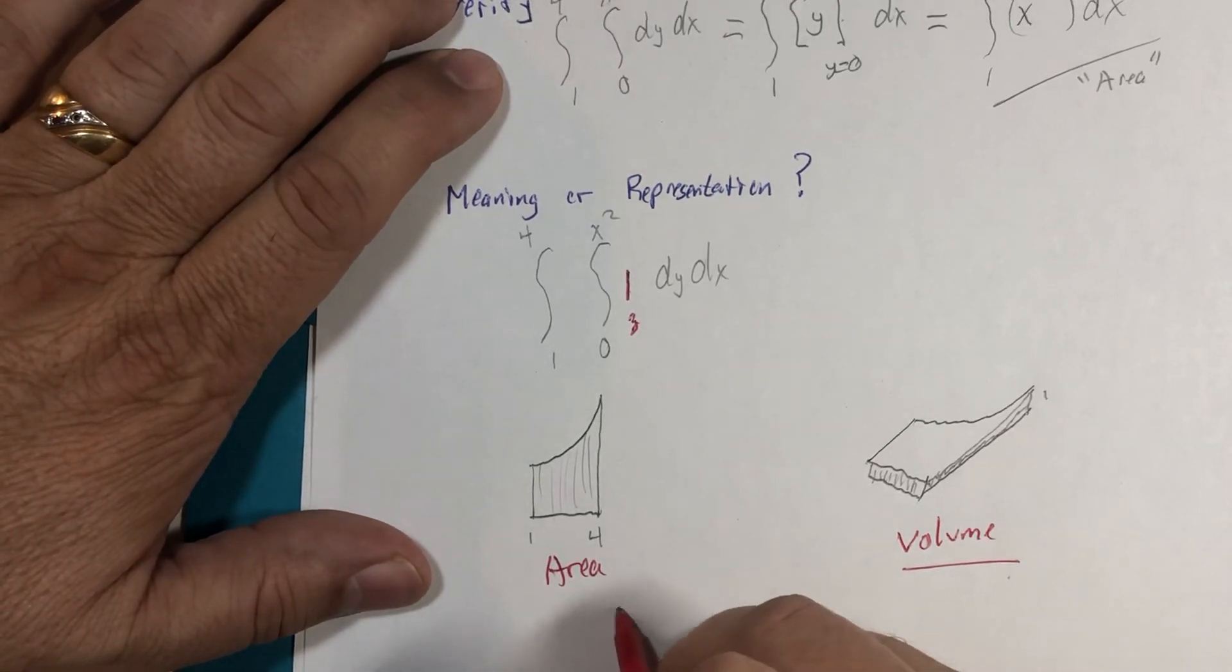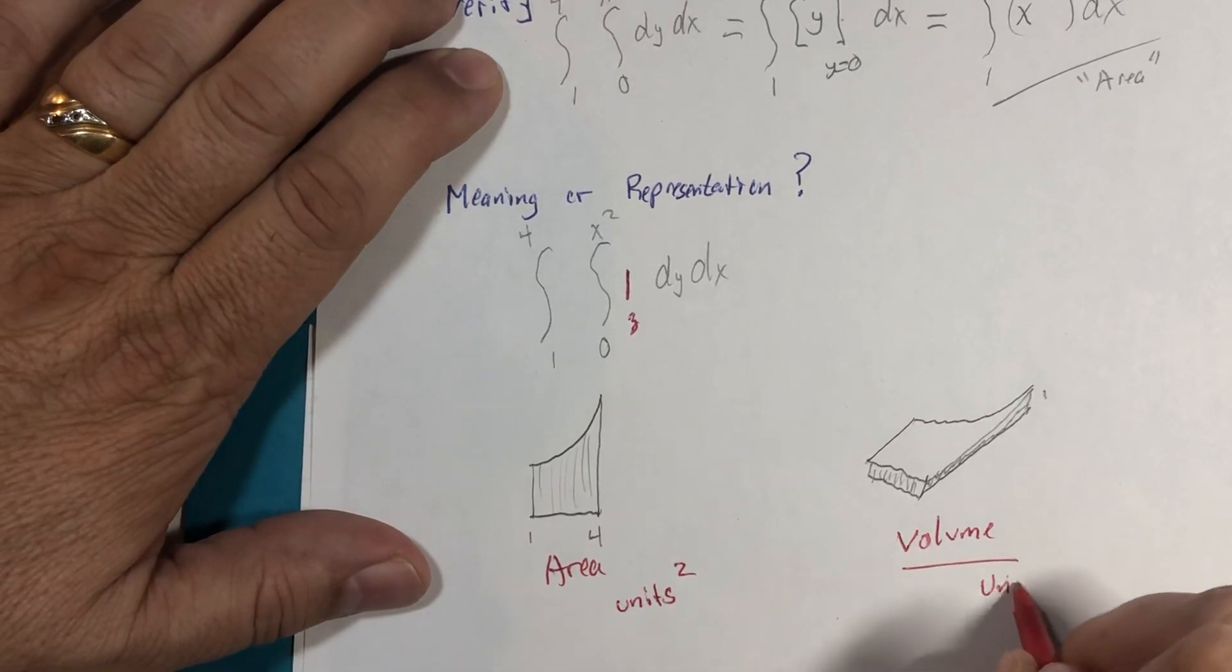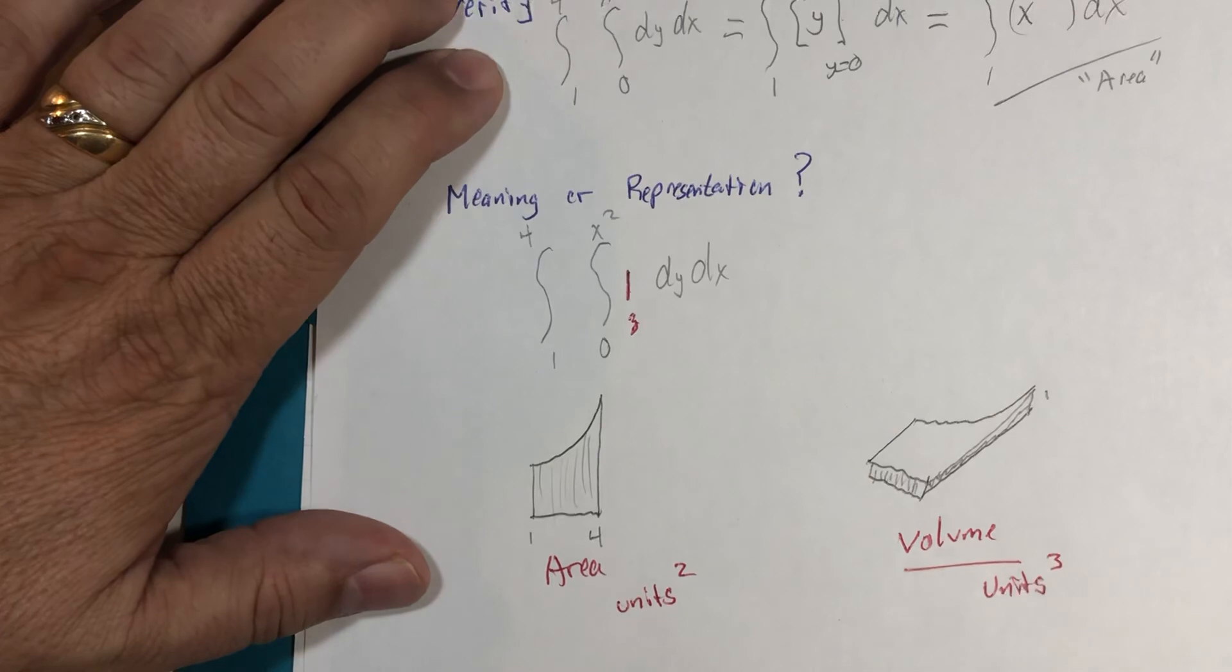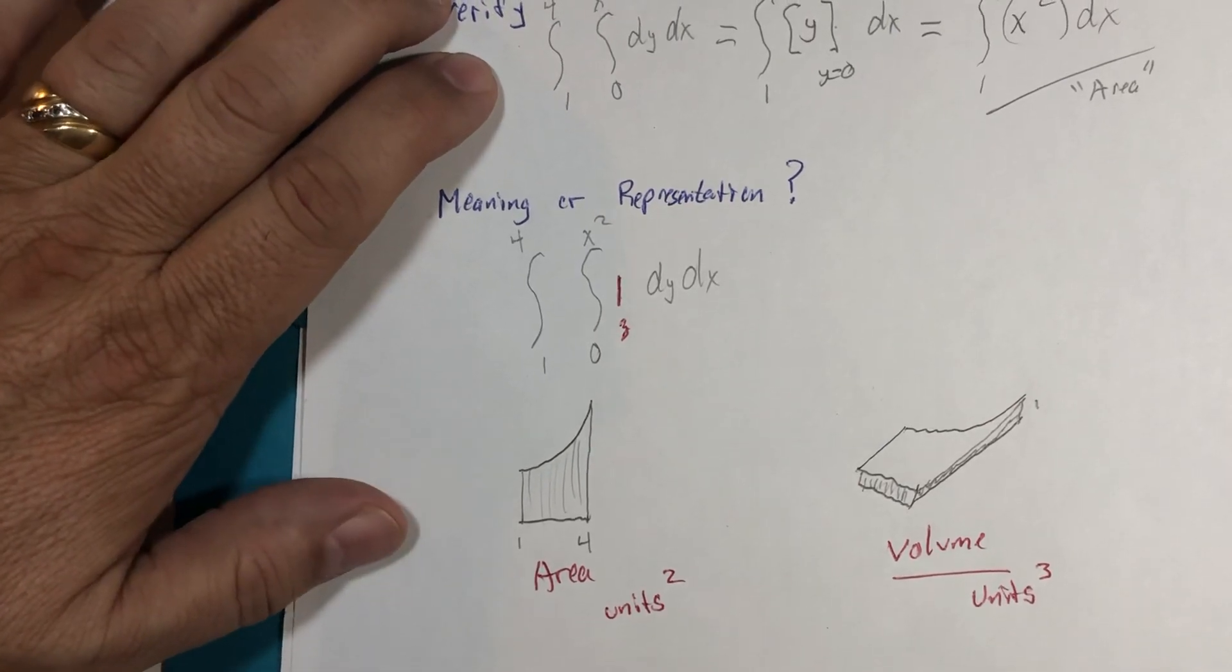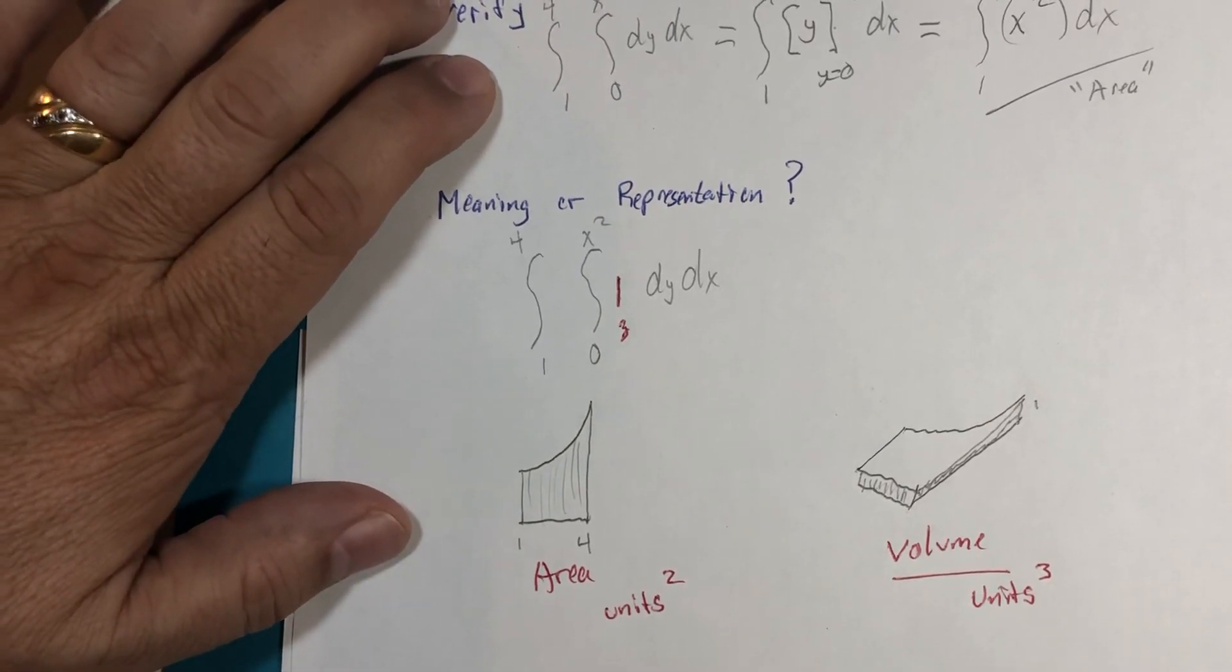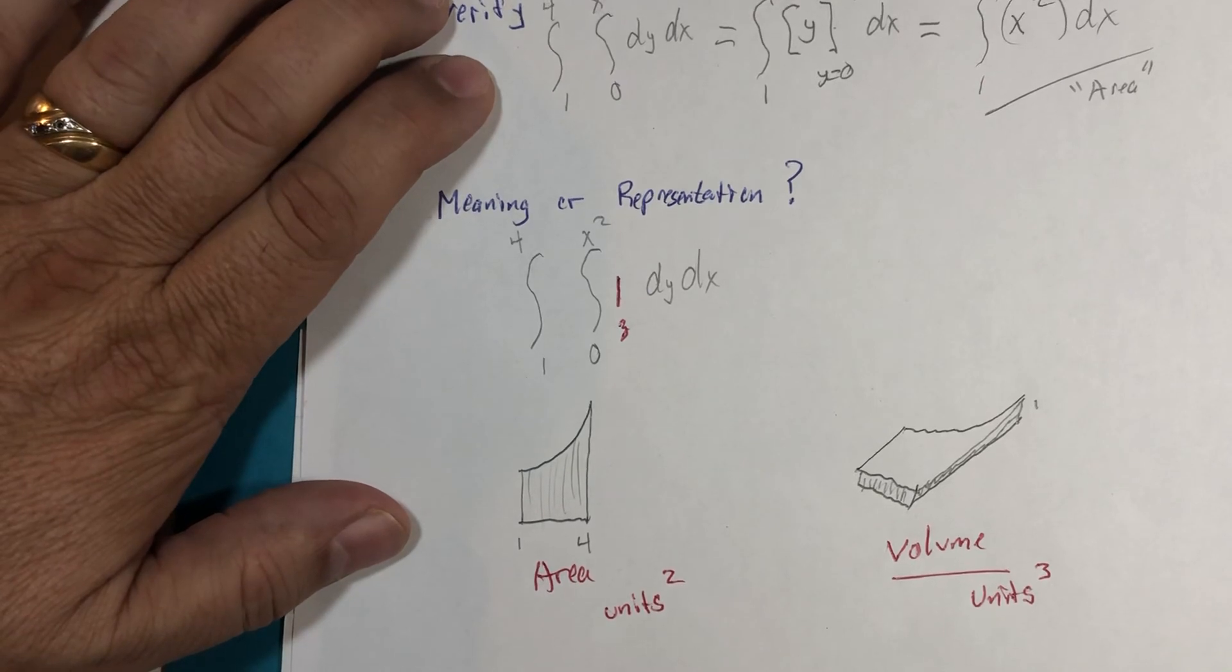The difference is here we would have units squared and in this one we'd have units cubed. And we would hope that the question would provide us some guidance of which type of question we're looking for. All right, till next time.